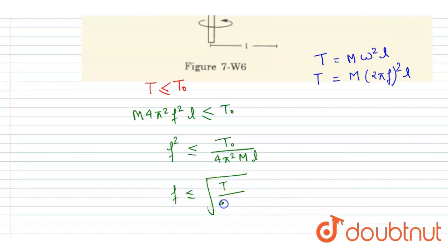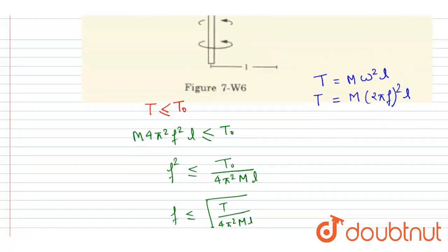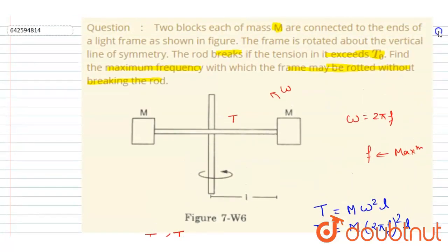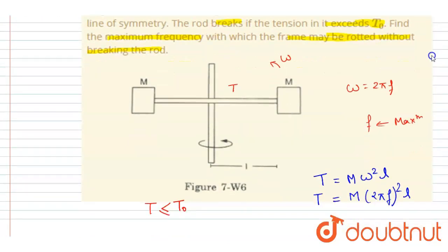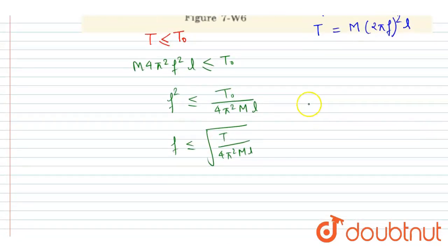Now you can see very clearly what can be the maximum value of frequency with which the system can be rotated. So the maximum frequency value is this. So this is our answer, thank you.